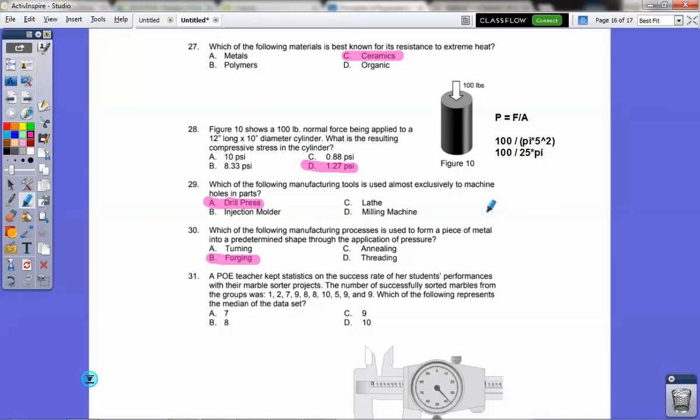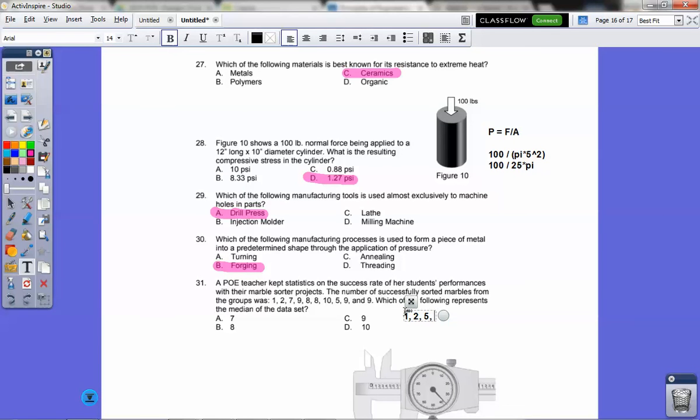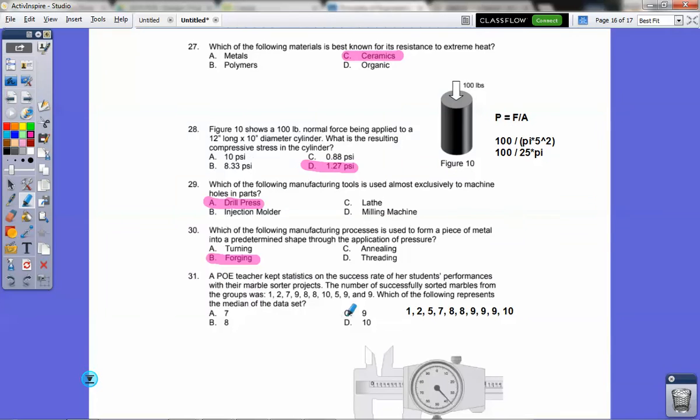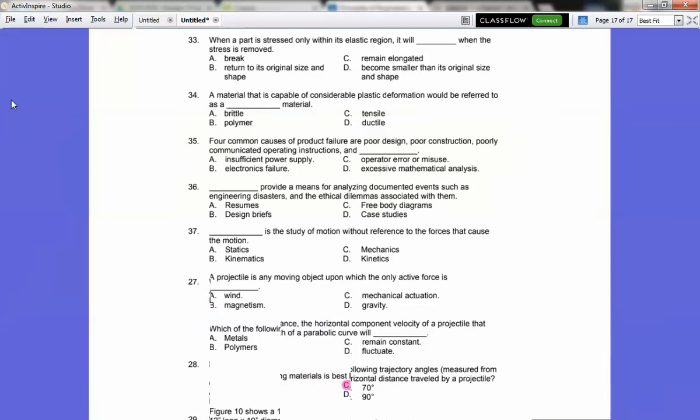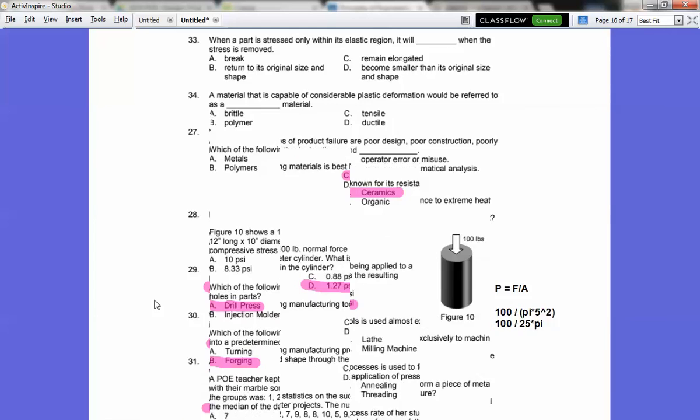31. A POE teacher keeps statistics on the success rate of her students' performances with marble sorter projects. Oh, that's a throwback right there. Number of successfully sorted marbles from the groups is 1, 2, 7, 9, 8, 8, 10, 5, 9, and 9. Which of the following represents the median of the data set? To do the median, you have to sort the data. So you have to do these in order. So 1, 2, 5, 7, 8, 8, 9, 9, 9, 10. I think I got them all. So the median, this is a 10 number data set. So the median would be between the 5th and 6th values. So it would be right here, since both values are exactly the same, it is B, 8. However, if these numbers were different, like if this was 7 and this was 8, you would say the median is 7.5. You have to average the 2.